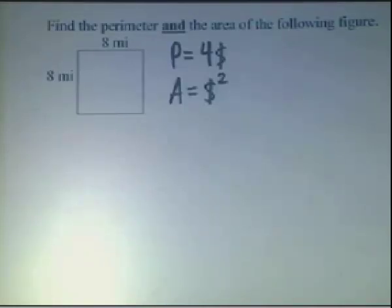Here we want to find the perimeter and area of a square. This square is 8 miles on a side. That means it's 8 miles by 8 miles.